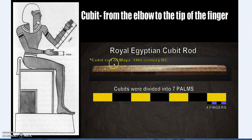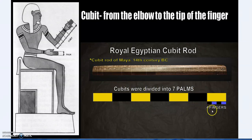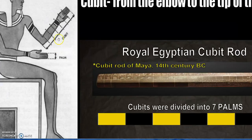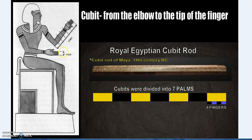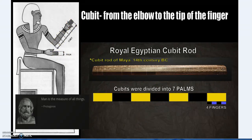Looking at a cubit rod from the 14th century BC to illustrate: cubits were divided into seven palms, and each palm into four fingers. So one cubit equals seven palms equals 28 fingers. From the tip of the elbow to the tip of your longest finger — the man is the measure of all things — four fingers make one palm, and 28 fingers make one cubit.